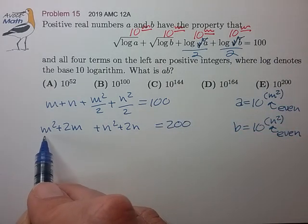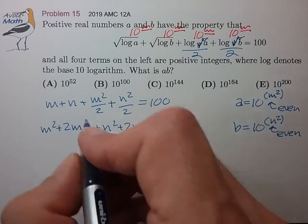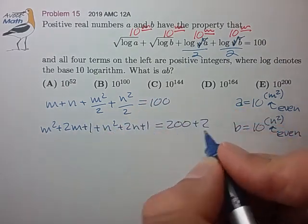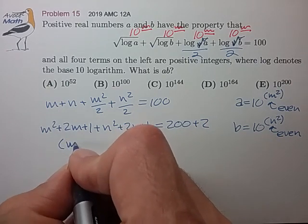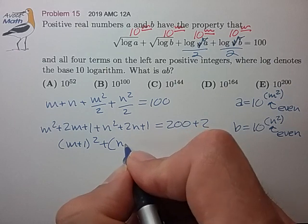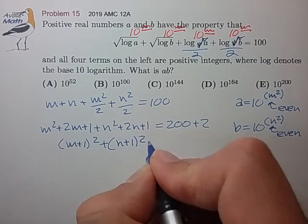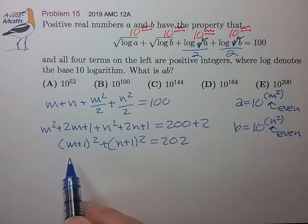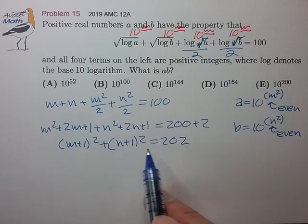Anytime you have squares plus linear terms it's usually a good idea to complete the square. Let's do that. After factoring we have an integer equation involving squares totaling to 202.